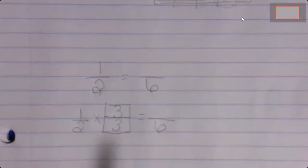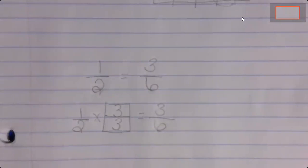So if my denominator is three, what is my numerator? Three. And then I do the math — one times three is three. So I'm saying that one-half is equivalent, or equal, to three-sixths.